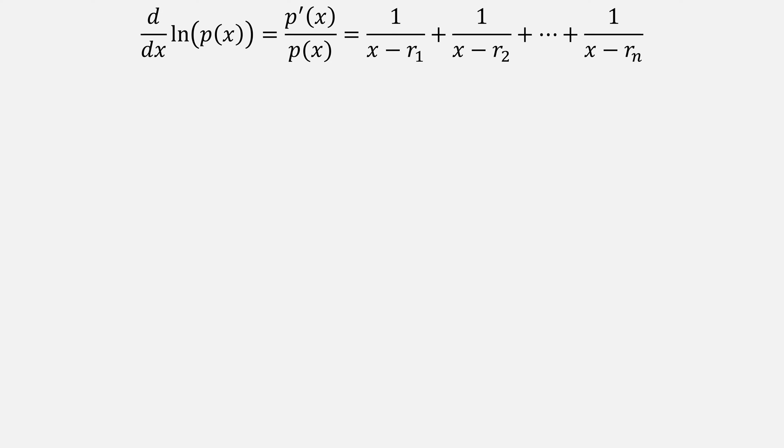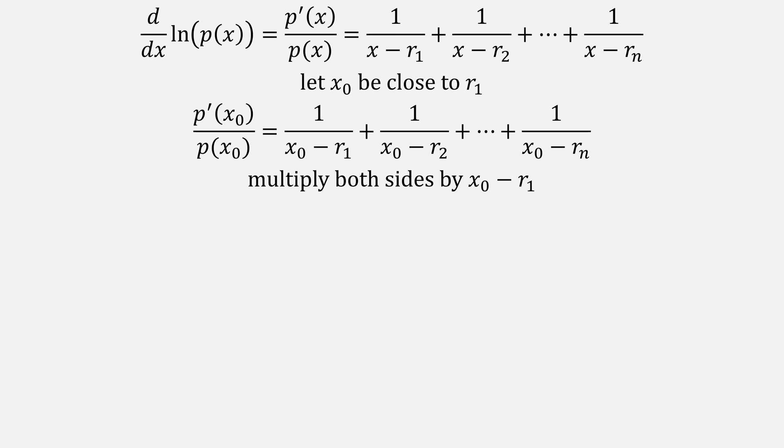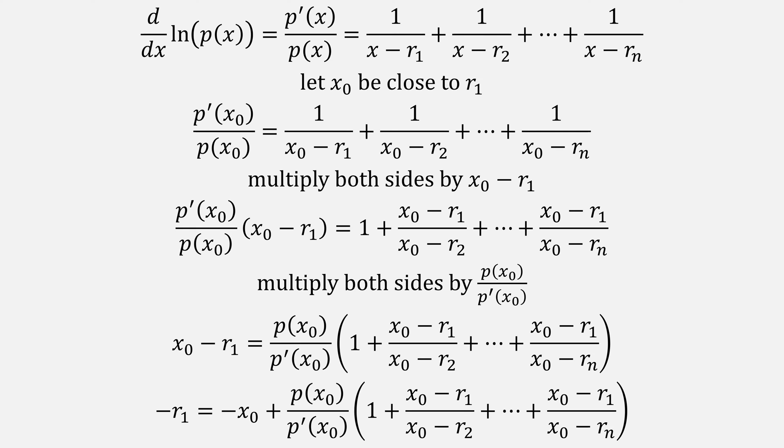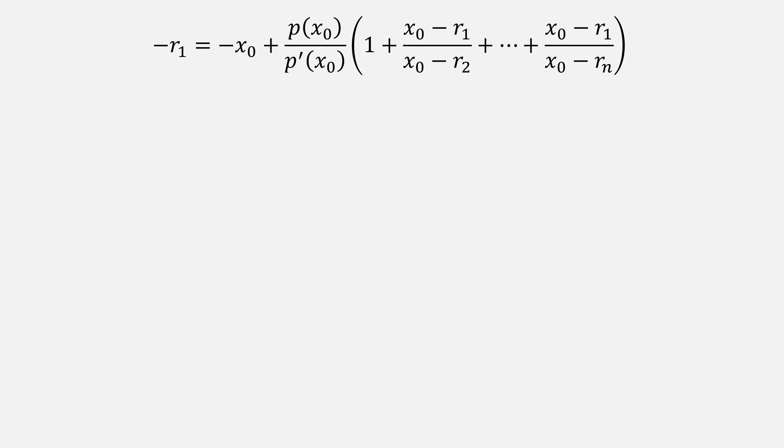Using this form, we can solve for one of the roots. Let's let x0 be close to one of those roots r1 and plug it into our equation. Then multiply both sides by x0 minus r1 to give us this form. Afterwards, we can multiply both sides by p divided by p prime to come up with this equation, which we can subtract x0 from both sides to isolate r1. If we then multiply both sides by negative 1, we can come up with this expression for r1.